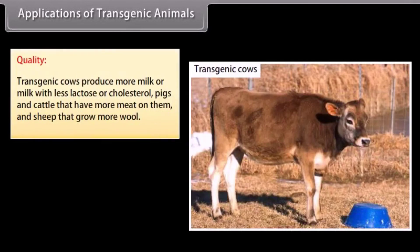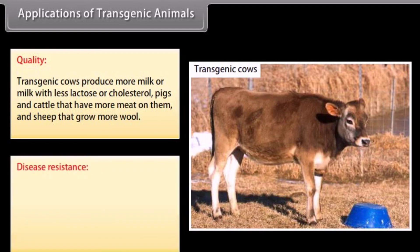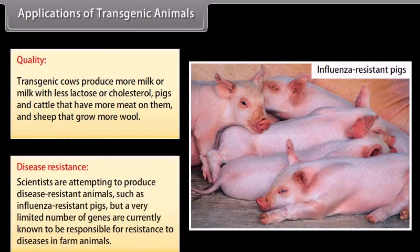Quality: transgenic cows produce more milk, or milk with less lactose or cholesterol, pigs and cattle have more meat, and sheep grow more wool. Disease resistance: scientists are attempting to produce disease-resistant animals, such as influenza-resistant pigs, but a very limited number of genes are currently known to be responsible for resistance to diseases in farm animals.